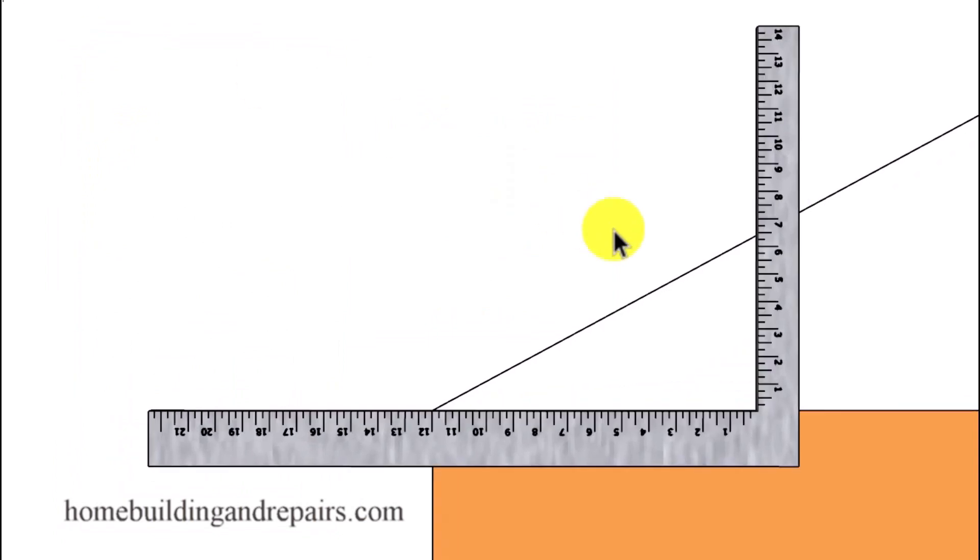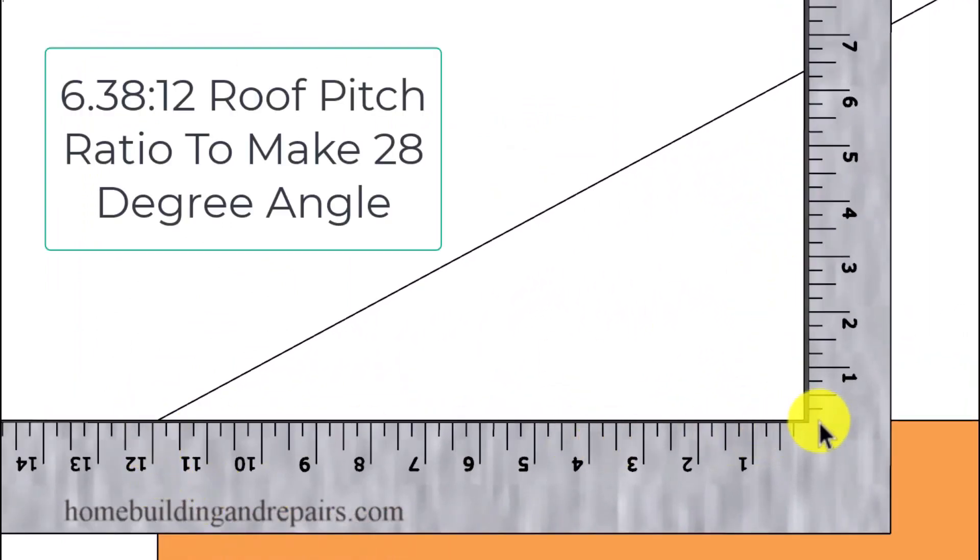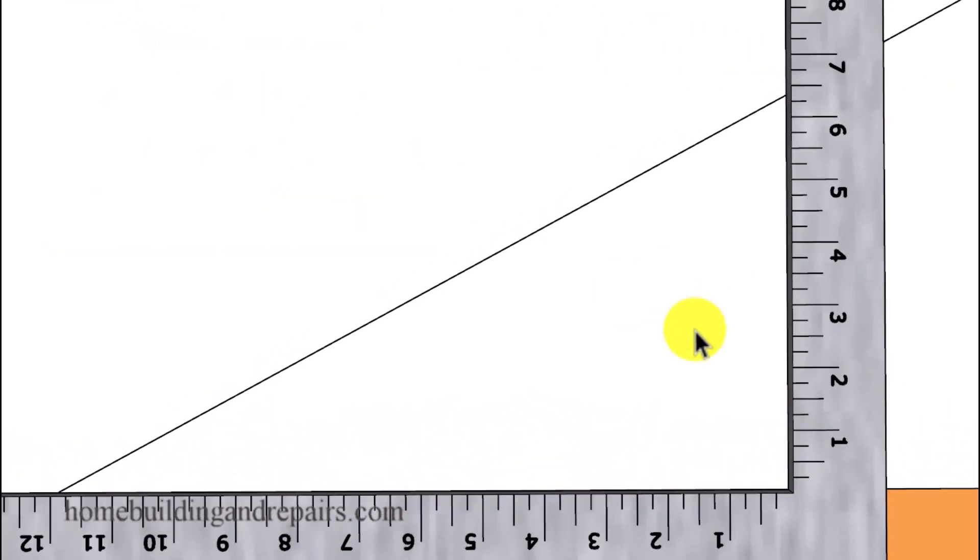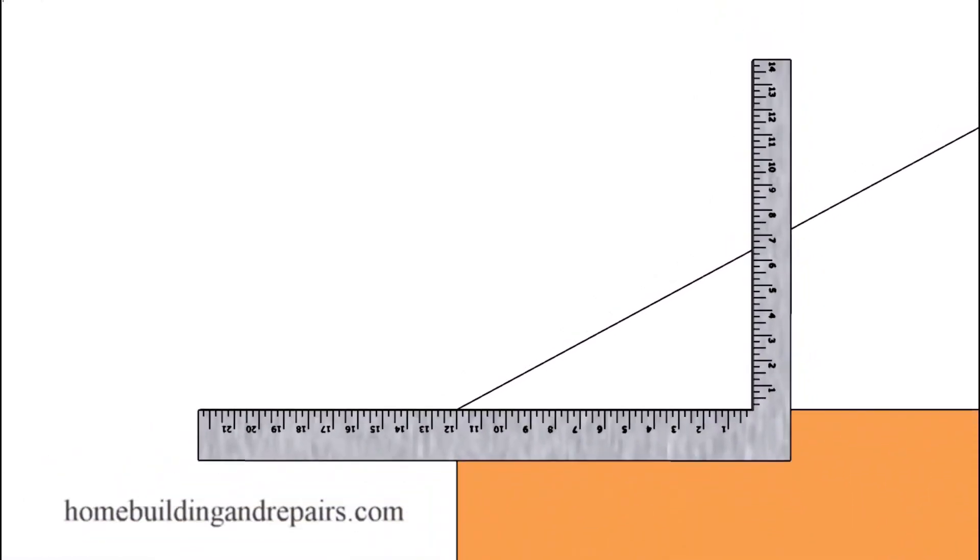And that would look something like this on the framing square. 12 unit measurement down here or 12 inches along with 6 and 3 eighths inches on the other side of the framing square. And I do have other videos on how to use a framing square to lay out roof rafters. Make sure you check those out at our website if you need a little more information about using a framing square to lay out a roof rafter.